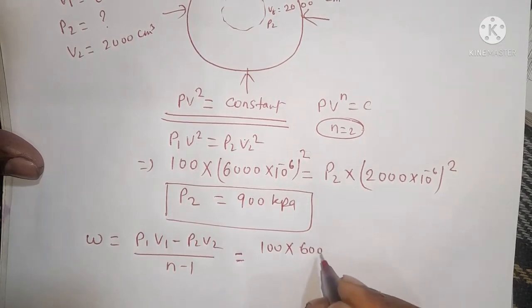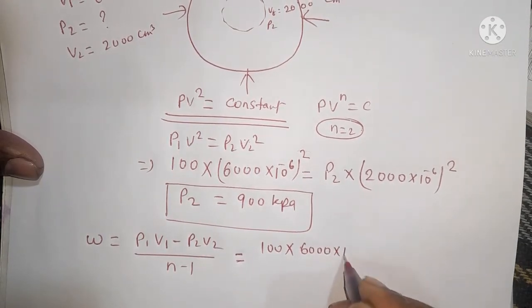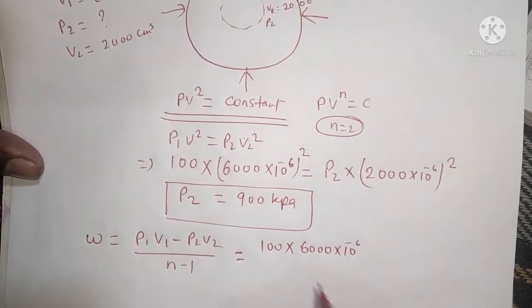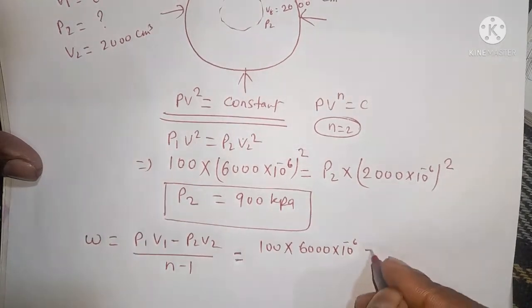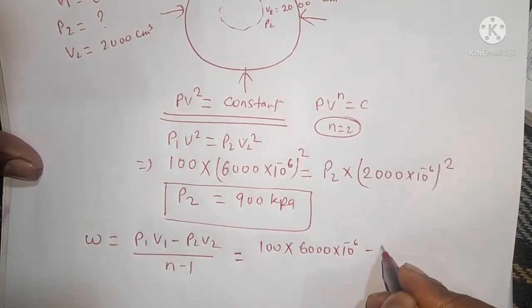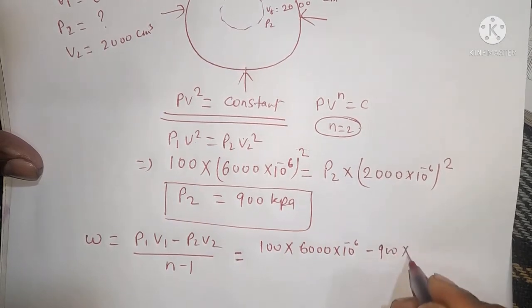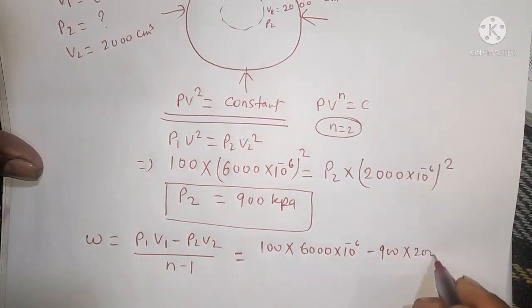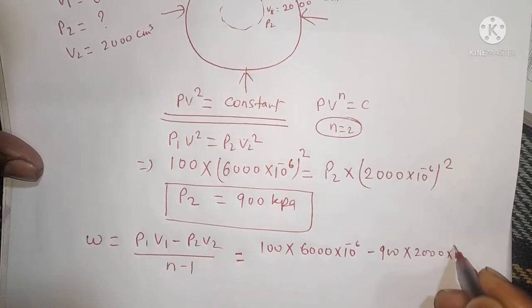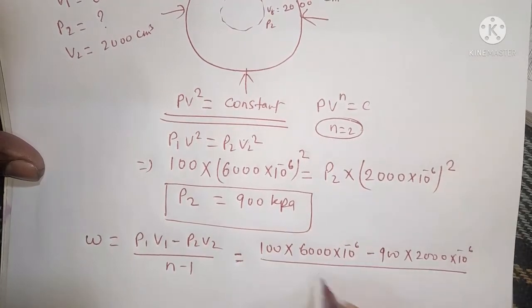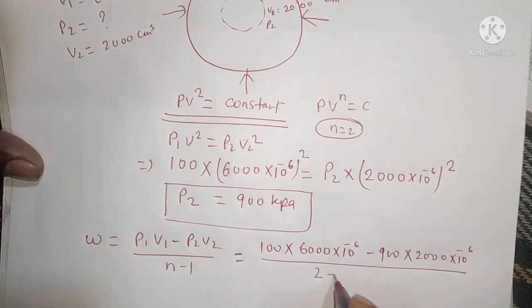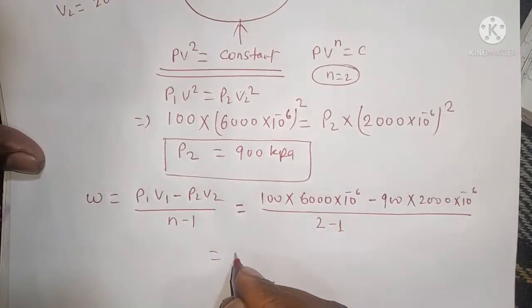P1 is 100 kilopascal, V1 is 6000 × 10^-6 cubic meters, P2 is 900 kPa, and V2 is 2000 × 10^-6 cubic meters. With n = 2, so n-1 = 1.